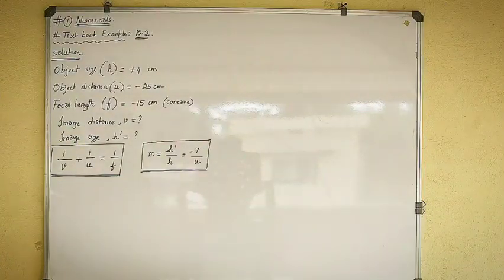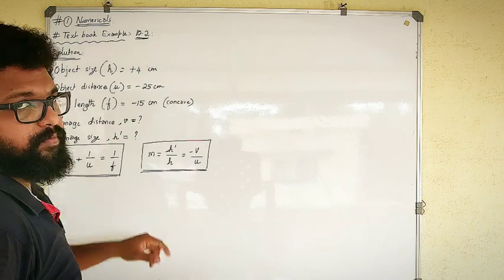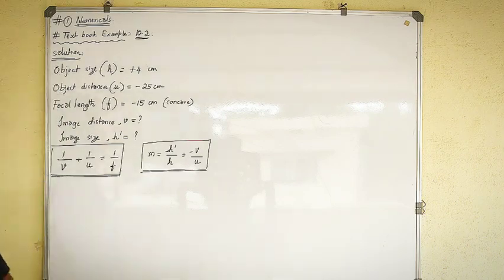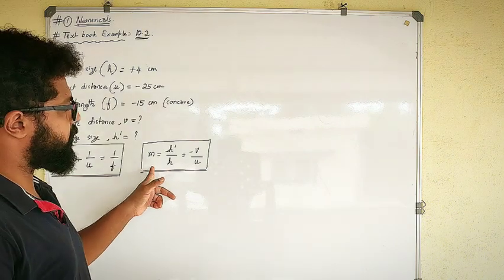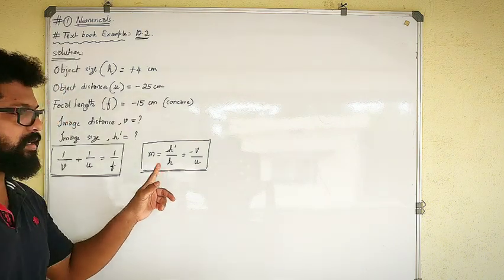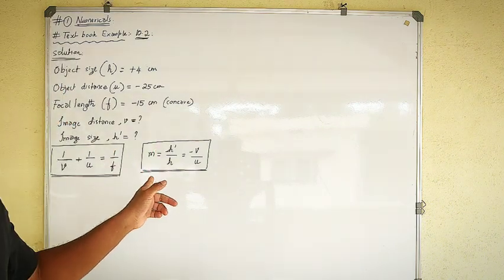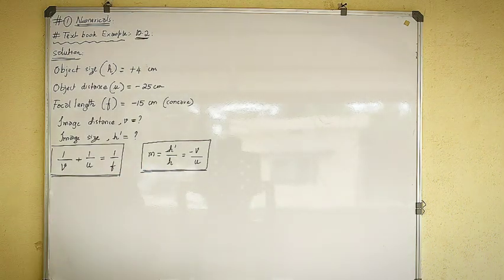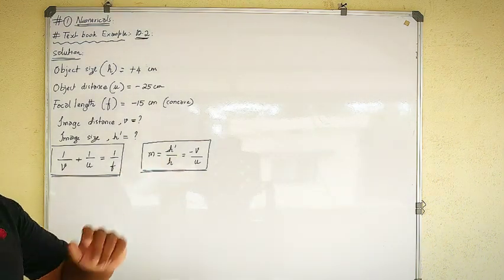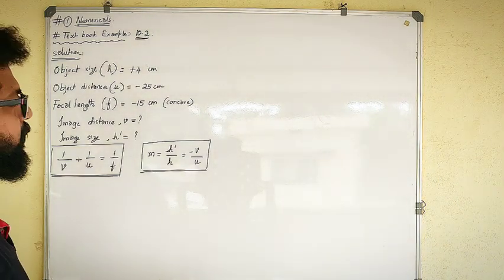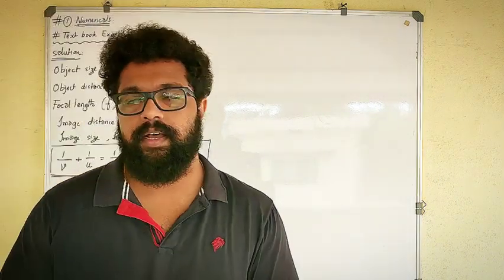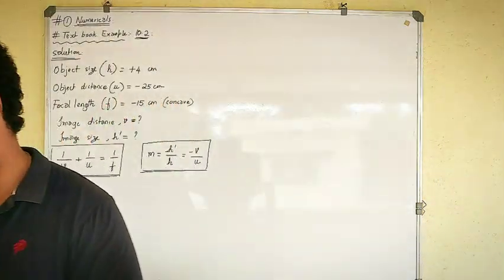As we have seen yesterday, we have come across these two formulas which I have already written on the board: the mirror formula, 1/V + 1/U = 1/F, and the magnification which is height of the image to the height of the object, or minus V by U. These two formulas will be helping us to solve a given numerical problem.